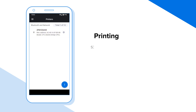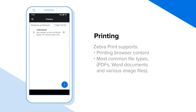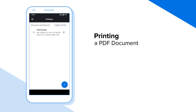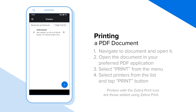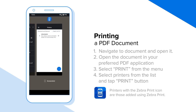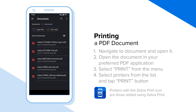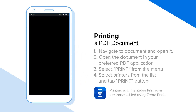Zeepr Print supports printing browser content and most common file types such as PDFs, Word documents, and various image files. Here we'll see an example of how to print a PDF document. First, navigate to the document and tap to open it. Open the document in your preferred PDF application.